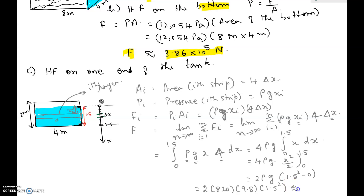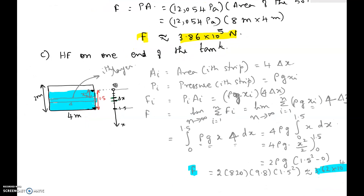Substituting rho equals 820 and g equals 9.8, times 1.5 squared, the result is approximately 3.62 times 10 to the power 4 newtons. This is the force on one end of the tank. Hope this video helps.